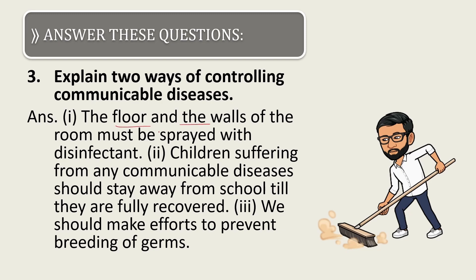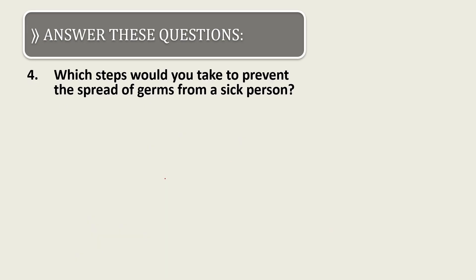Third long answer: explain two ways of controlling communicable diseases. The floor and walls of the room must be spread with disinfectant. Children suffering from any communicable disease should stay away from school until they are fully recovered. We should also make efforts to prevent the breeding of germs.